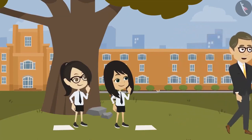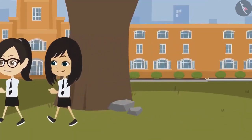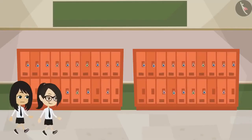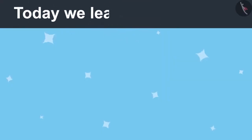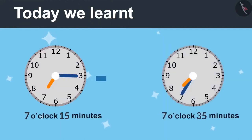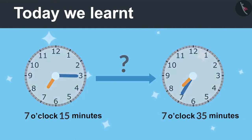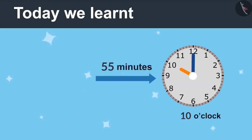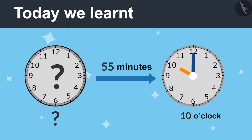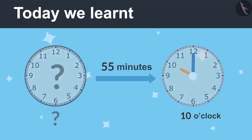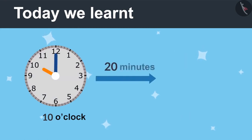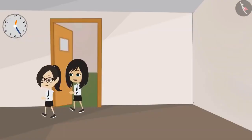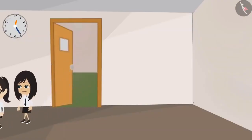We calculated three things related to time. First, we were given the start time and end time — we found out how long it would take. After that, we knew what the end time is and how long it takes — through that, we found out the start time. And lastly, we knew the start time and the time it would take to complete the work — with that, we found out the end time of the job.